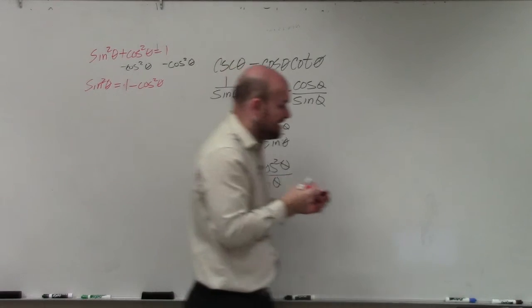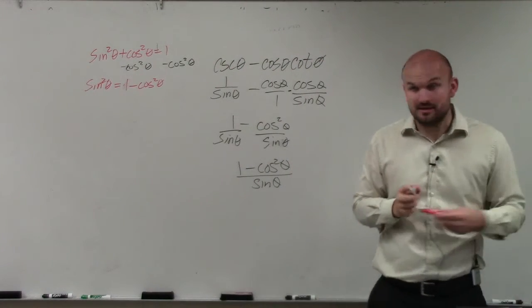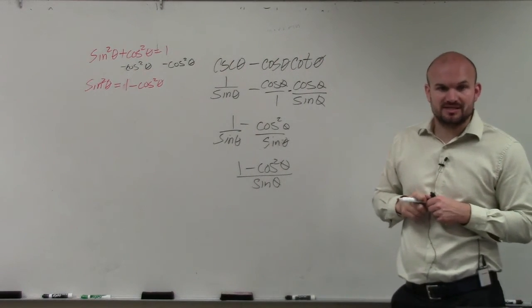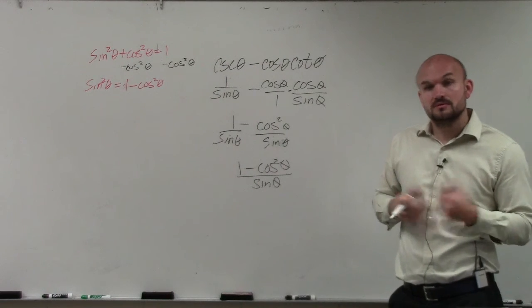So by looking at my identity that was given to me, what does 1 minus cosine squared, what is that equivalent to? Sine squared.